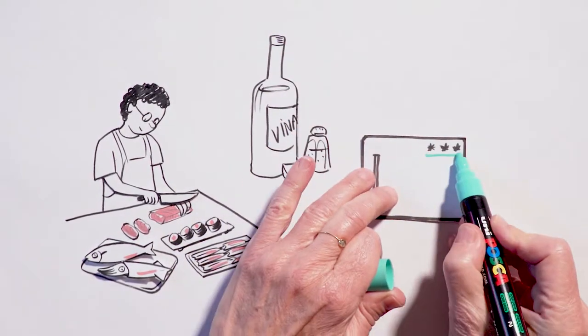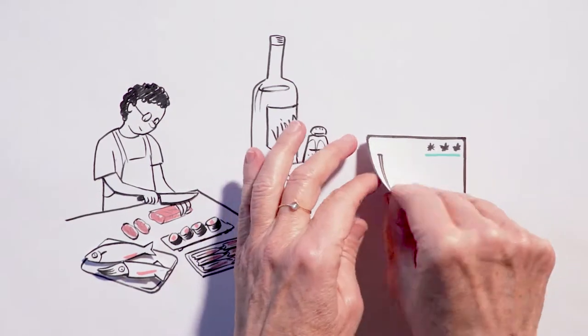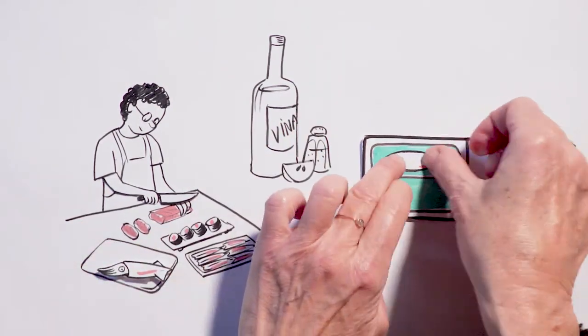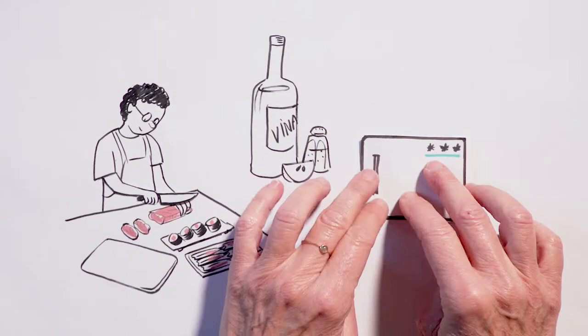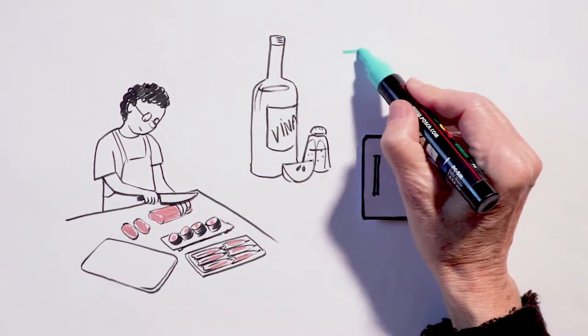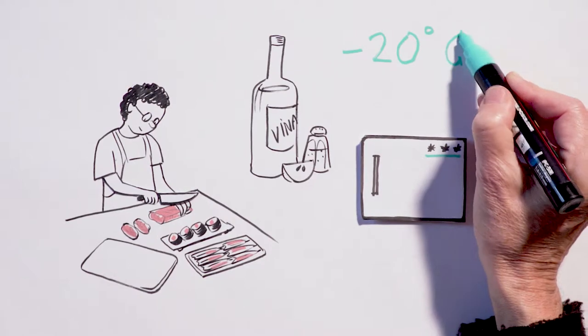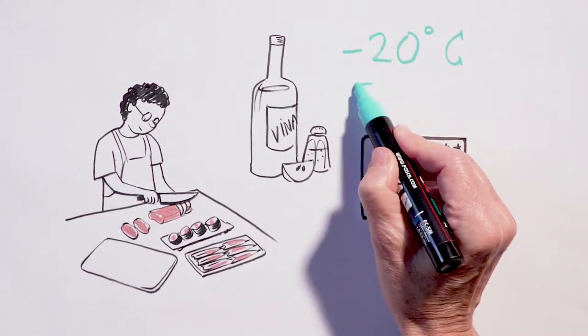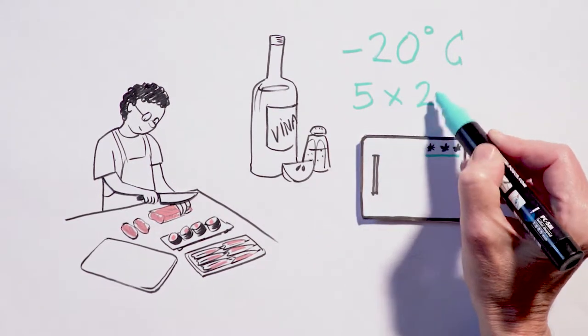If your freezer has at least three stars, it means it reaches minus 20 centigrade. So stick your fish in it and freeze it for five days at minus 20, which is minus 4 Fahrenheit. If your freezer doesn't go down to minus 20 degrees, forget it. Buy your fish already frozen.